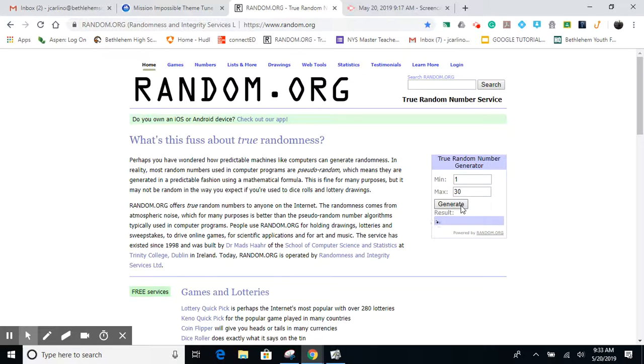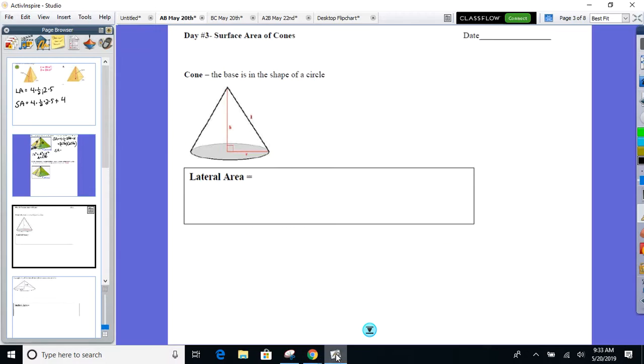Here we go, waiting. Take those earbuds out unless you're in the FBI. I'm just going to guess a number, 15. Everything but the base. What is the base? Circle. So I'm going to take off the circle.